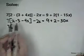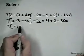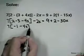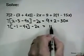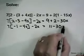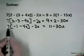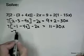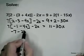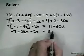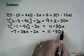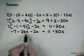2 minus 3 is negative 1 minus 4x minus 2x equals 11 - 30x. We'll remove these brackets. Negative 7 minus 28x minus 2x equals 11 - 30x. Combine the x terms.